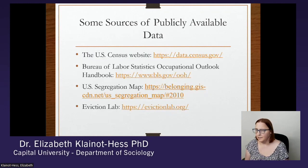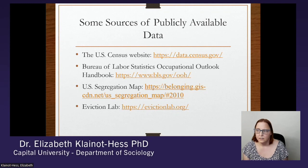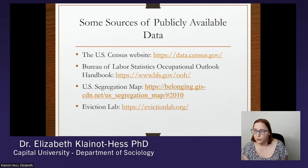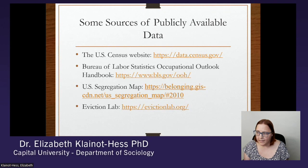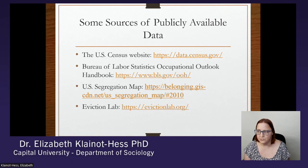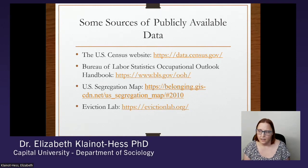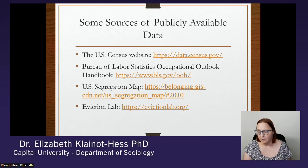There are a lot of sources of free publicly available data that are easy to access and don't cost anything. One of those is the U.S. Census website, which has data on a lot of different topics. The Bureau of Labor Statistics Occupational Outlook Handbook provides a lot of information on different jobs. The U.S. Segregation Map uses census data to create an interactive map where students can look at particular metro areas and what segregation looks like there over time. There's also the Eviction Lab, which uses census data to provide a tool to compare eviction in different cities or census tracts.